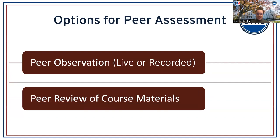For peer assessment: you might do a peer observation — having a peer or colleague sit in on a class, observe live, take notes, and write up a reflection. Or you might share recorded lectures from when you were teaching remotely and have a peer observe the recording. Also peer review of course materials — you could hand your syllabus, an assignment, or something else to a peer and ask them to write comments, such as noting whether the readings align well with your learning outcomes. Priya notes in the chat that you may have recorded classes during the online period of the pandemic.